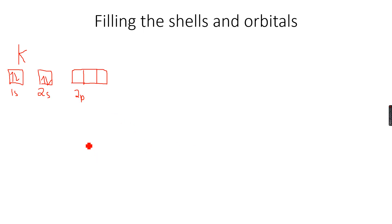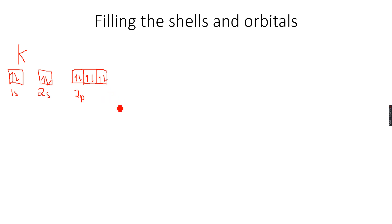2p has less energy than 3p, so we write 2p. Now we fill this, then this, then this. We are left with 12 electrons, then we start filling the next subshells. After 2p we will come to 3s — sorry about that.